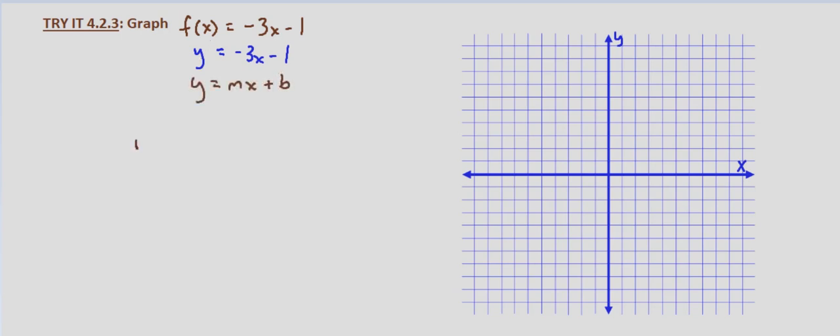So m = -3 and b = -1, because -1 is the same thing as +(-1).